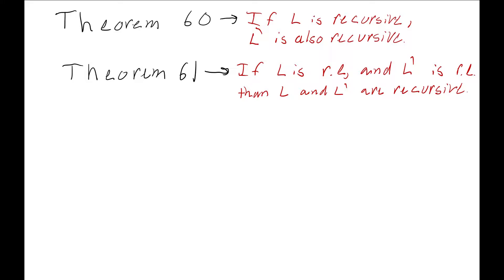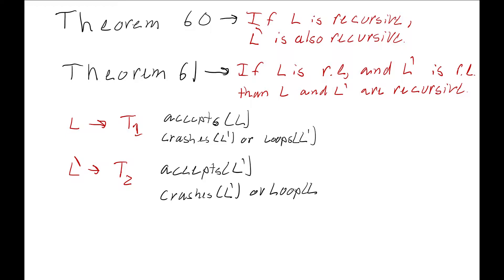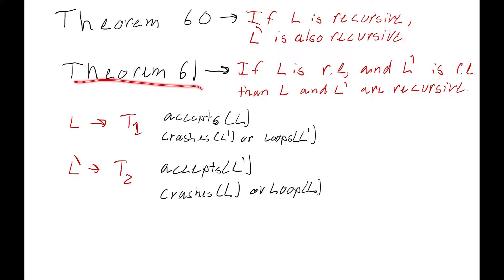To prove this, L is accepted by Turing machine 1. Since it's recursively enumerable, it accepts L and either crashes or loops on L complement. Then there's another Turing machine — Turing machine 2 — that accepts L complement. It accepts L complement and crashes or loops forever on L. So now to prove our theorem, we know these two Turing machines exist because their languages are recursively enumerable.